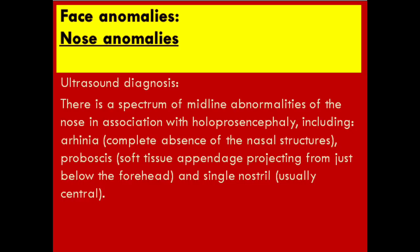The last abnormality in our lecture is nose anomalies. Ultrasound diagnosis: there is a spectrum of midline abnormalities of the nose in association with holoprosencephaly, including arhinia — complete absence of the nasal structures — proboscis — a soft tissue appendage projecting from just below the forehead — and single nostril, usually central.